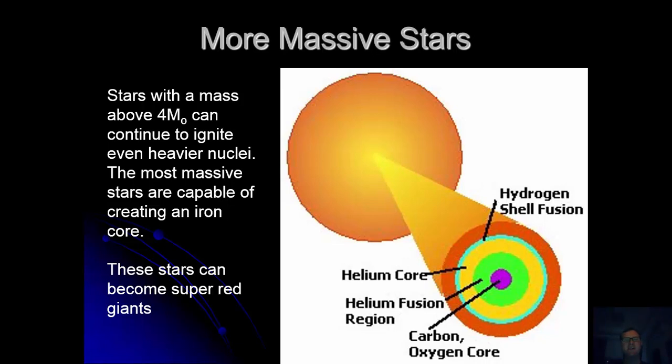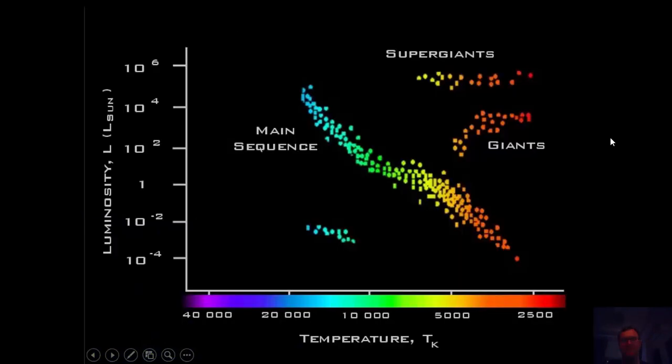What can happen is that they can end up igniting even heavier nuclei. So therefore, not only will we have hydrogen burning, but we might have helium fusing as well, and we might have a central carbon and oxygen core. These stars can become known as super red giants. So that means they go through the same process, but heavier elements will start to fuse because there's enough mass to reach those higher temperatures and they become super giants. So that's the end for more massive stars. We've got giants and we've got super giants.